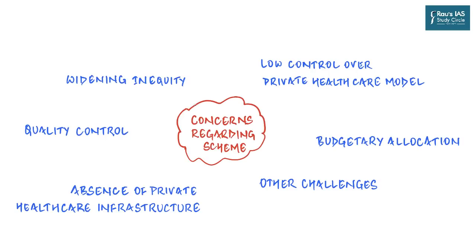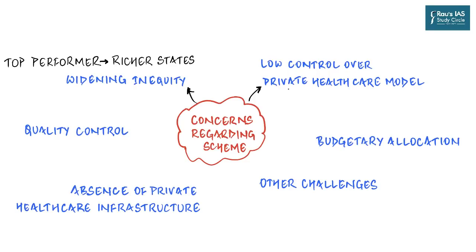The Clinical Establishment Act 2010, mandated to register and regulate health facilities, has failed in regulating the private sector in the 10 states and union territories where it was implemented. The absence of standard treatment guidelines and protocols means irrational practices can increase the cost of care. For instance, since PM-JAY works like an insurance scheme, a beneficiary can access tertiary care in private hospitals and the hospital gets reimbursed — with no standard operating procedure preventing unnecessary procedures like ordering an MRI for a stomach ache.